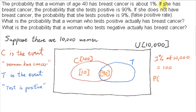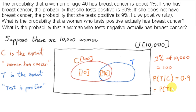We can represent this as a probability statement: the probability that she tests positive given that she has cancer is 90%, or 0.9. Linking this to conditional probability, that's the probability of T intersecting C divided by the probability of C — that is, 90 divided by 100.